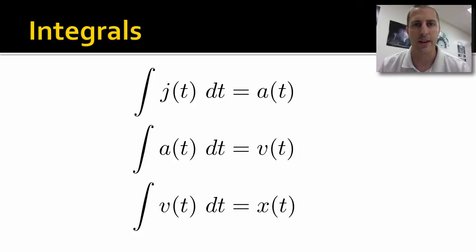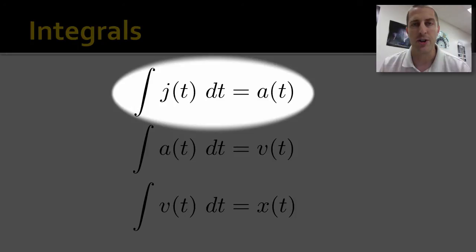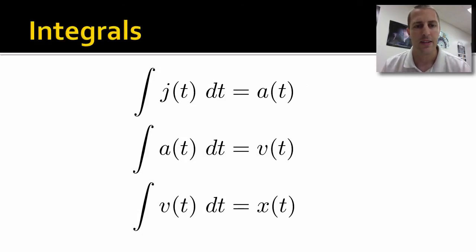This is what an integral looks like. It's just the opposite of a derivative. You have that integral sign, the long S looking thing. Here we'd say we have the integral of the jerk with respect to time equals the acceleration. That dt tells us that t is our variable. Everything else is a constant. The integral of acceleration with respect to time is velocity. The integral of velocity with respect to time is position.